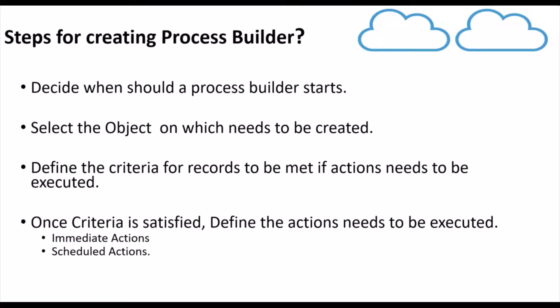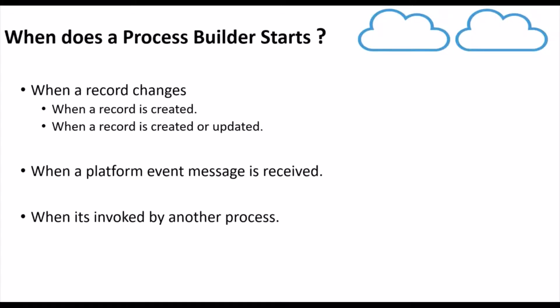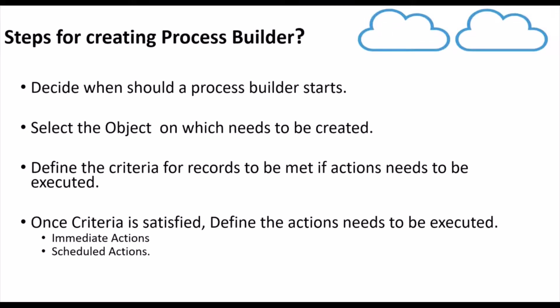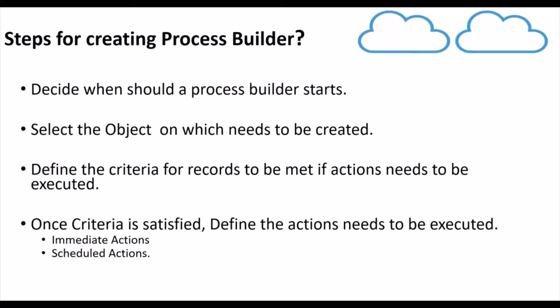What are the steps for creating a Process Builder? First, you need to decide when the Process Builder should start — whether on record change, on a platform event, or whether it's launched by another Process Builder. Next, you need to select the object on which you want to create the Process Builder. For example, on update of an opportunity, you will select opportunity as the object.